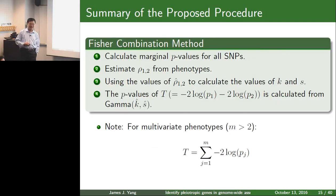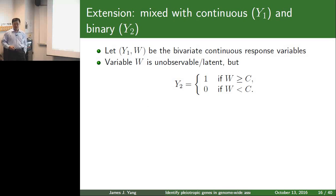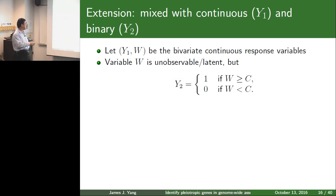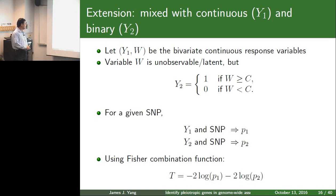For the case with two variables — one continuous and one binary — we observe Y1 and Y2 where Y2 is binary, but we assume Y2 is derived from a latent variable W using a threshold model. For this scenario, you can still calculate a p-value from the continuous or binary outcome using linear or logistic regression to get p-values. So you still get the test statistic T.